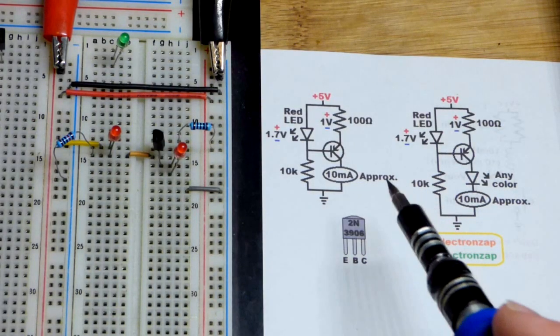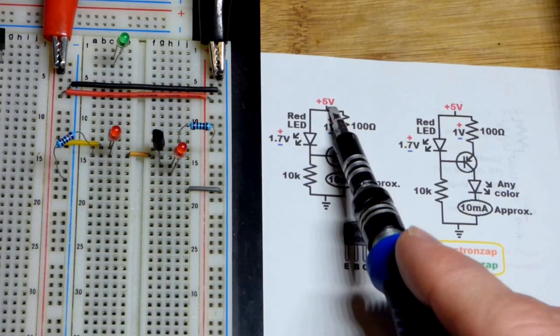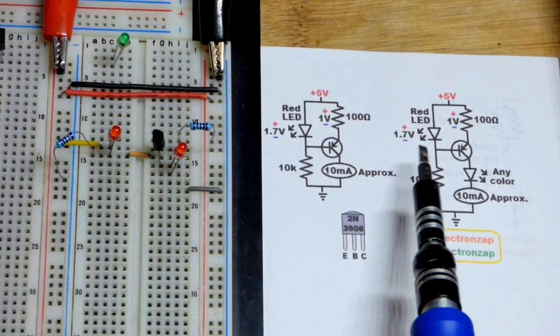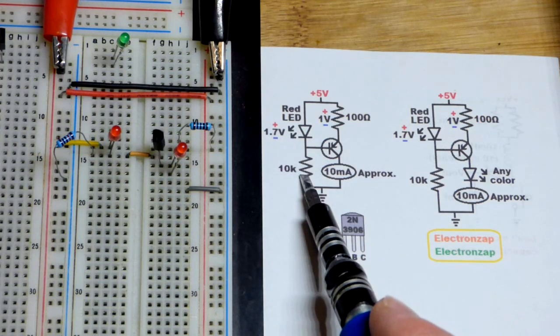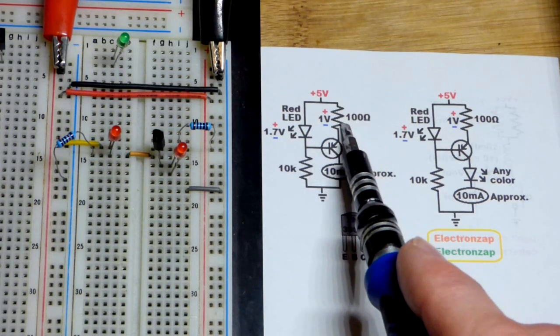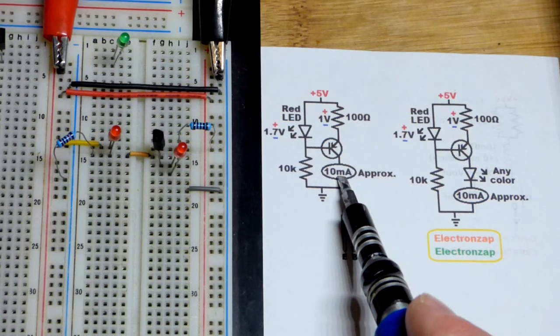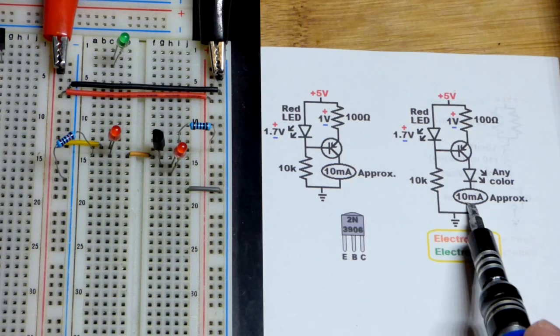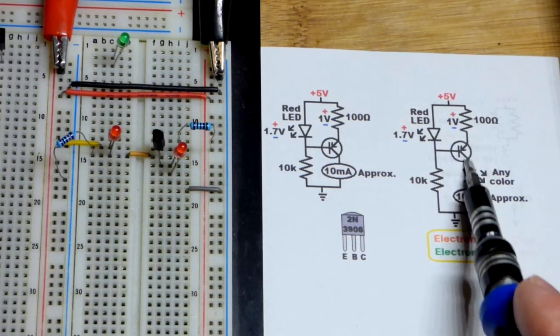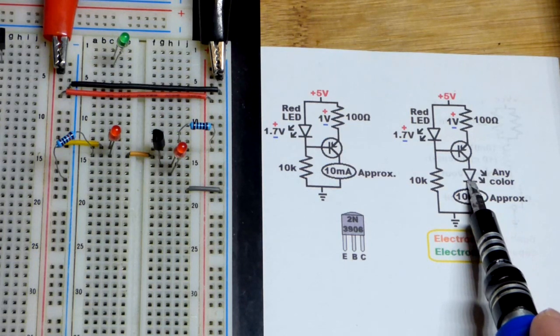In this video we're going to see how we can take a PNP bipolar junction transistor with 5 volts, which we can vary a bit, and a red LED with low current. We're going to set about 1 volt across a 100 ohm resistor, which should give us 10 milliamps of current if there is no load. It should also give us 10 milliamps if there is a load, as long as the load doesn't need too much voltage.